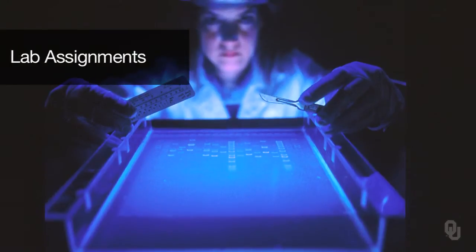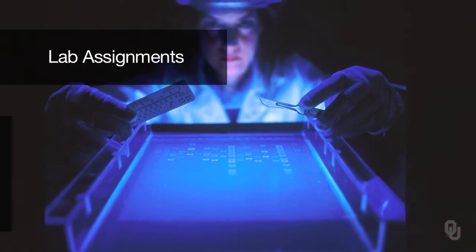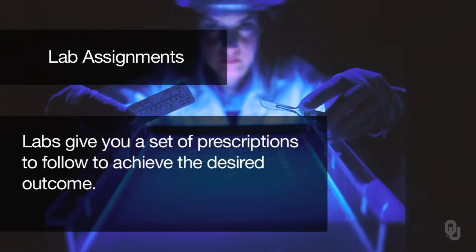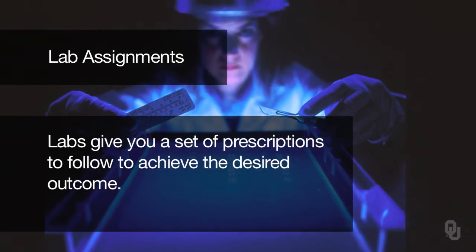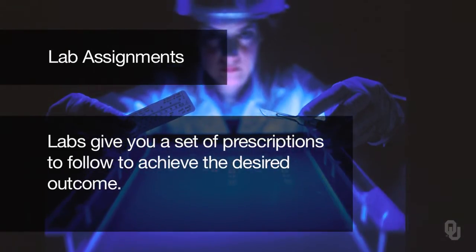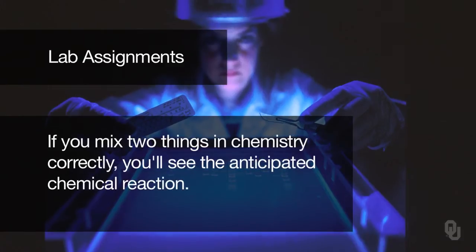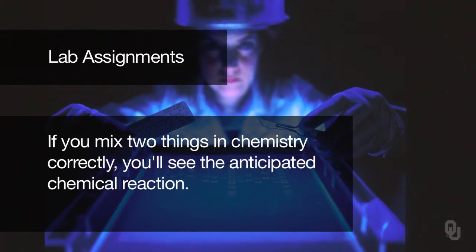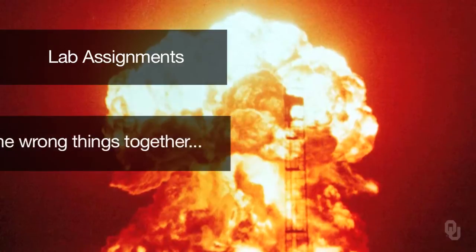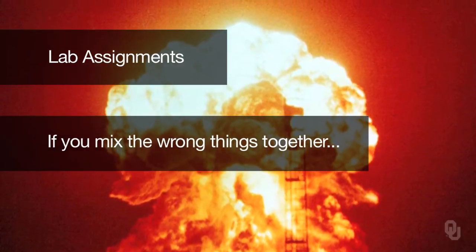And if you've ever taken a science lab — chemistry, physics, biology — they all give you a set of prescriptions that you need to follow in order to achieve the outcome of the lab. For example, mix two things together in chemistry and you get to see a chemical reaction. If you mix the wrong things together, maybe something doesn't work the way you expect. Those are algorithms.